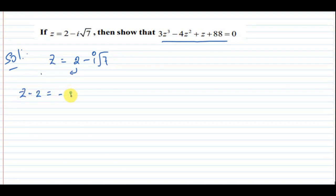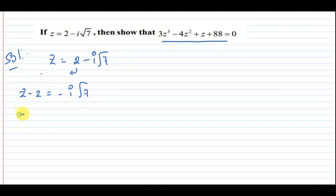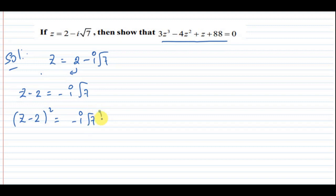Z minus 2 is equal to minus i root 7. Do whole square on both sides: Z minus 2 whole square equals minus i root 7 whole square.